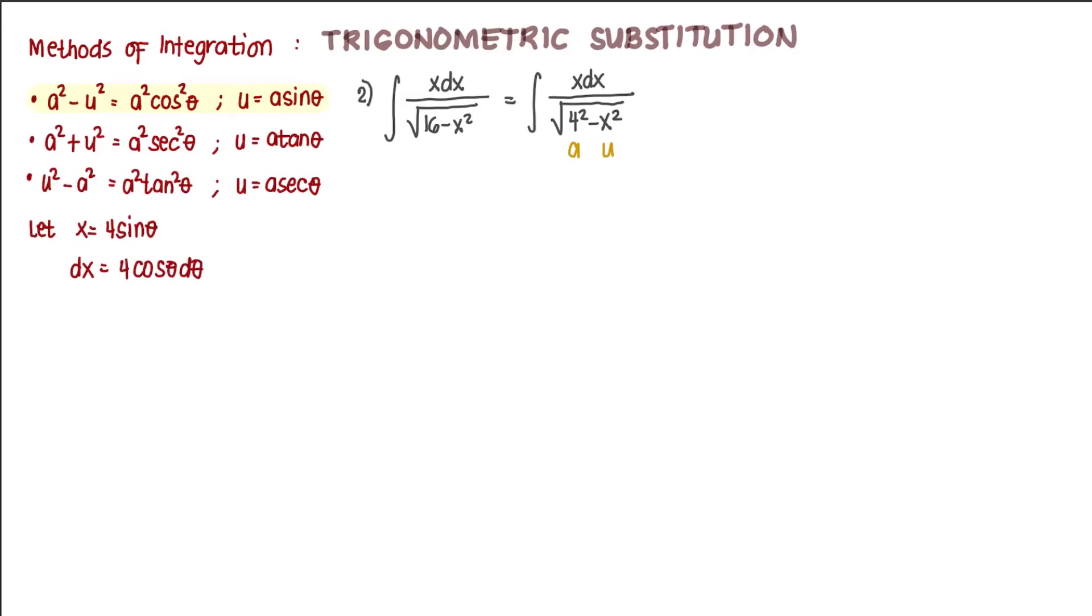Take note that we have to replace all x's in our given integral, and we have to express them all in terms of the new variable theta. So we now have x that we can replace to the given integral, and now we have dx. We just have to now express 4 squared minus x squared.